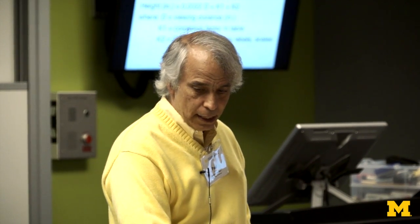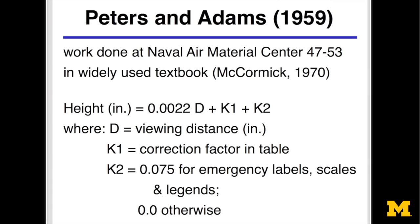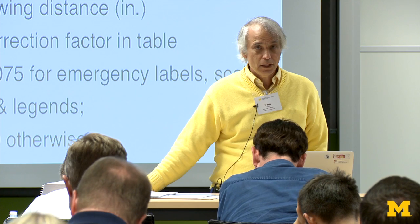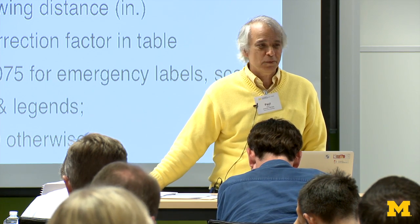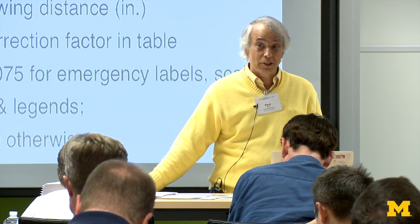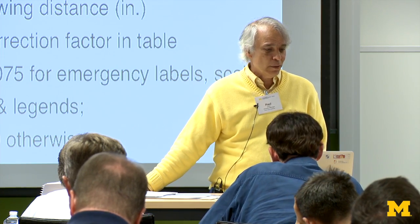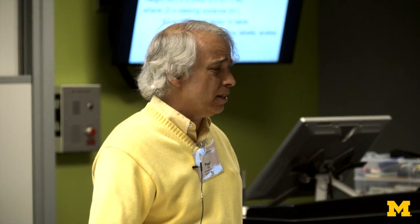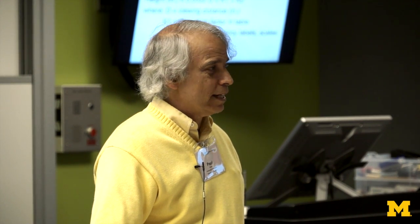The first one is the so-called Peters and Adams formula, on page 3-16. The Peters and Adams work actually came from a report the Naval Air Materials Center did between 1947 and 1953. McCormick referenced this report and provided the equations in his textbook — the standard human factors textbook — and the same equations may even appear in the mil standard. So where did these come from? I needed to find them.